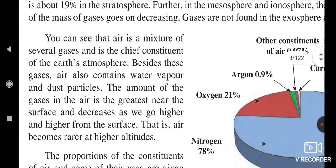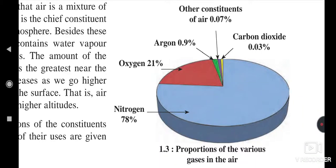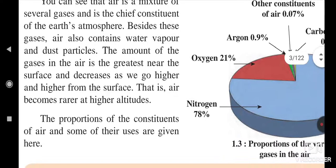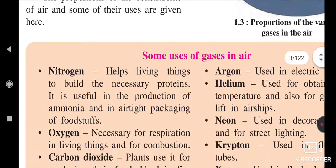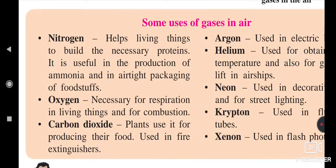Here we have a picture showing air contains gases in different proportions. The major proportion is nitrogen at about 78 percent, oxygen 21 percent, argon 0.9 percent, carbon dioxide 0.3 percent, and other gas constituents 0.07 percent. Near the surface, major gases — nitrogen, oxygen, carbon dioxide, argon, helium, neon, krypton, and xenon — are found in high density.